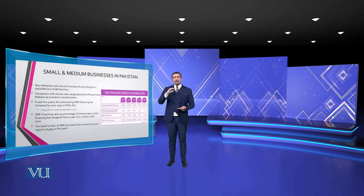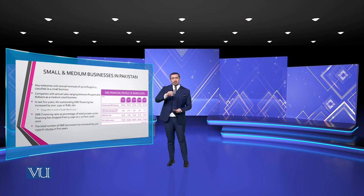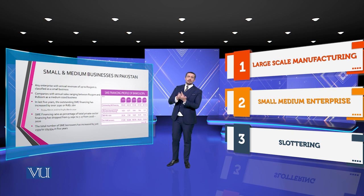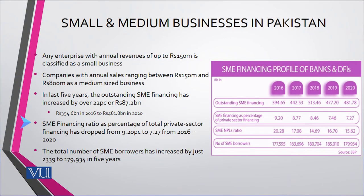So your small and medium scale sector — I've brought international relations, business portfolio, and sectoral development all together. Main sectoral coverage: large scale manufacturing, small and medium enterprises, and then slaughtering. Keep medium and small separate, but the total financing range has dropped from 9.27% to 7.27% by 2020. The total number of SME borrowers increased by just 2,339 over five years from 2016 to 2020 — a very marginal rise visible in the data.